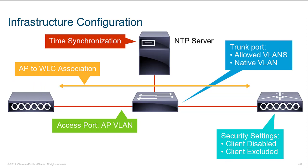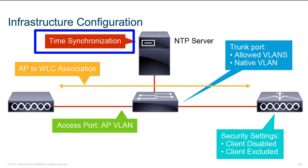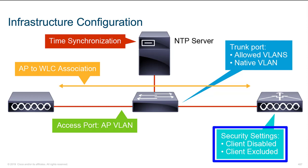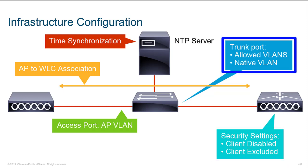The last area is infrastructure configuration issues. These include time synchronization problems with the NTP server — if dates and times are out of sync on your devices. The AP-to-WLC association may have failed, meaning the WLC isn't managing the AP, perhaps because the AP is in autonomous mode instead of lightweight (LWAP) mode. Security settings may be wrong, a client could be disabled or excluded in the WLC, and at the switching layer, a misconfigured trunk port with incorrect allowed VLANs or native VLANs can also cause client connectivity issues.